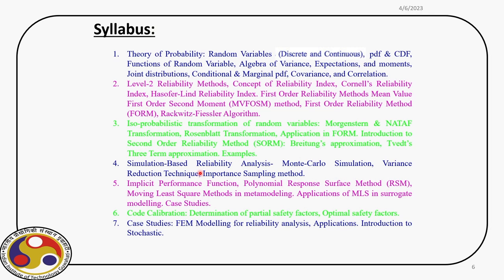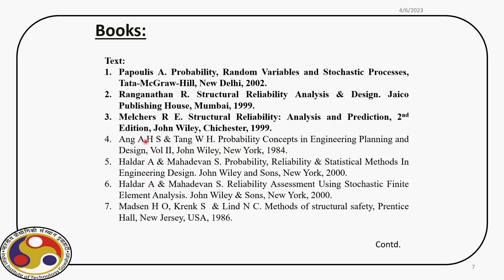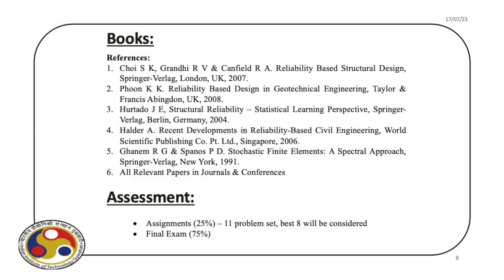We will then discuss code calibrations, covering partial safety factors familiar from deterministic design practice, and optimal partial safety factors, followed by case studies where reliability-based design is applied to practical examples. The course concludes with an introduction to stochastic FEM. Some recommended books are shown on screen — the first three will be frequently referenced. As we progress and cover different topics, additional study materials and relevant papers from journals and conferences will also be shared.